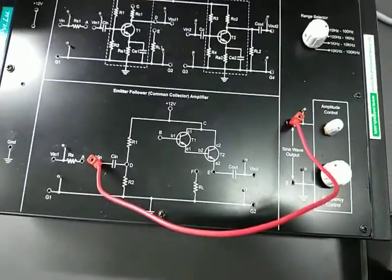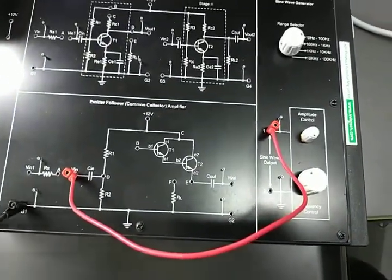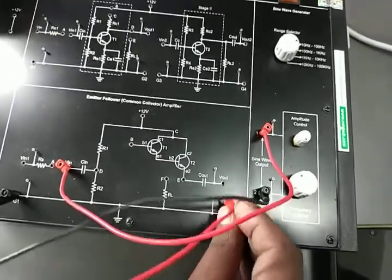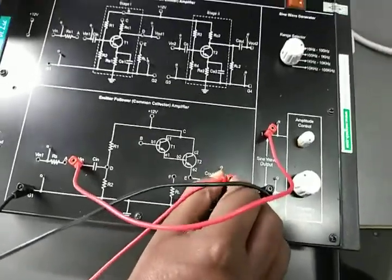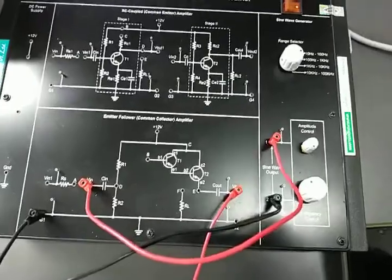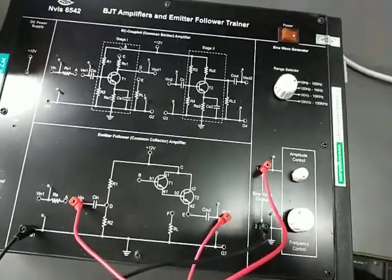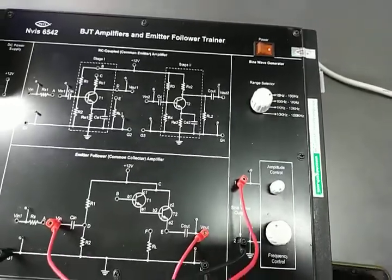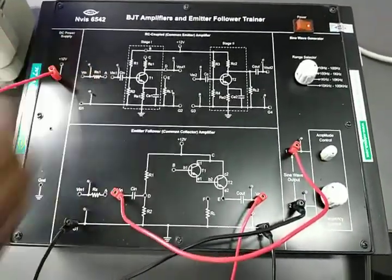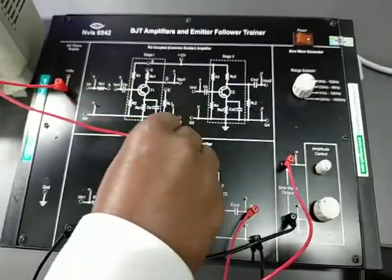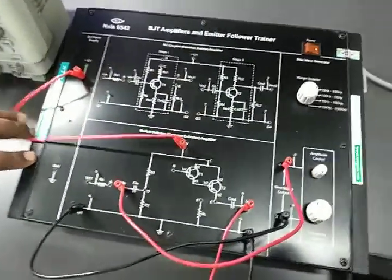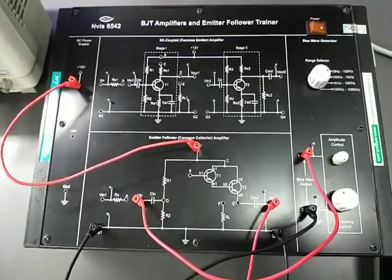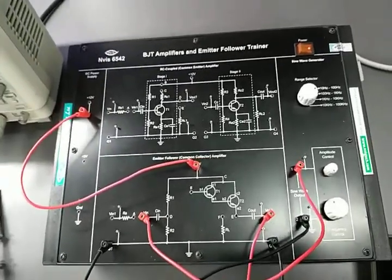I'm going to connect to the input of the emitter follower, and here we connect the ground. Now we will connect the output and ground, and here is the 12-volt power supply.